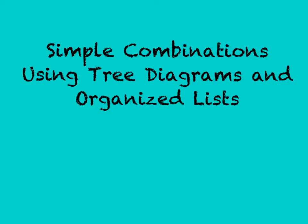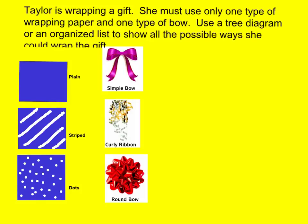Hey everyone, today we're going to be working on some simple combinations using tree diagrams and organized lists. Here's a quick problem we can do. Taylor is wrapping a gift. She must use only one type of wrapping paper and only one type of bow. Use a tree diagram or an organized list to show all the possible ways she could wrap the gift. Notice they want us to actually show the ways she could wrap it, not just tell them, not just say how many different choices she has.